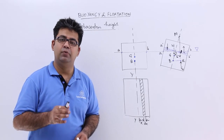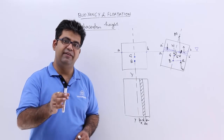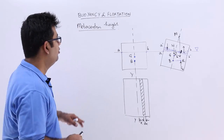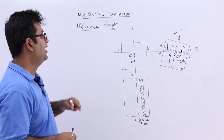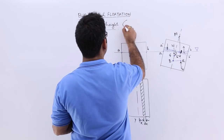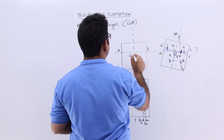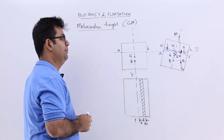Now that we understand what is metacentric, let's derive an equation for metacentric height, which we denote as the distance between the points G and M.